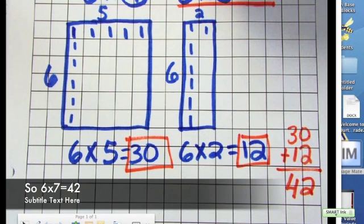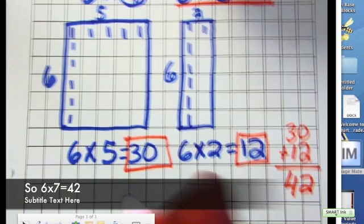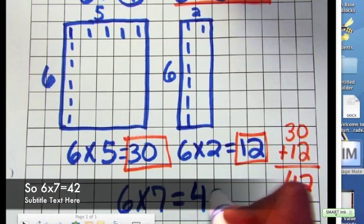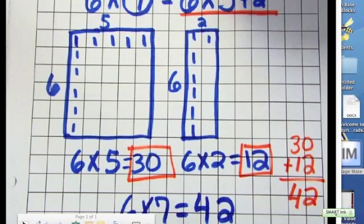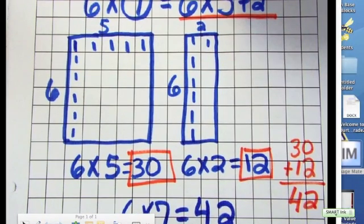And when I'm solving, six times seven equals 42. And that is how we use the break apart strategy for multiplication.